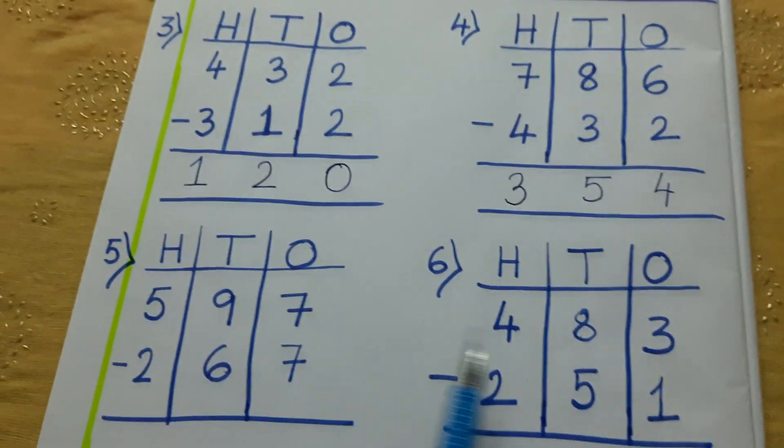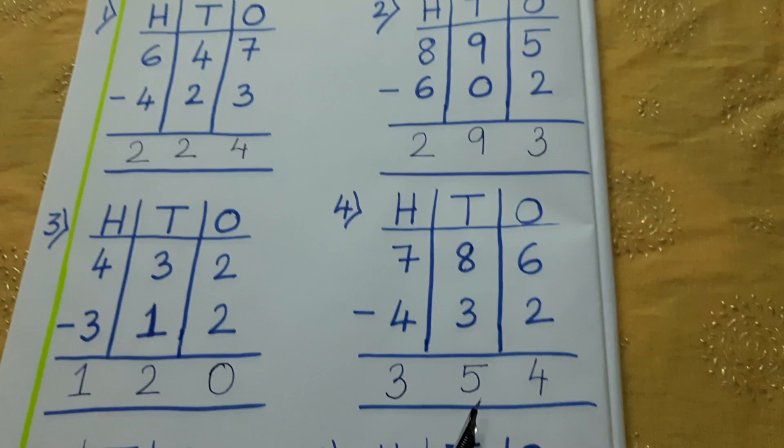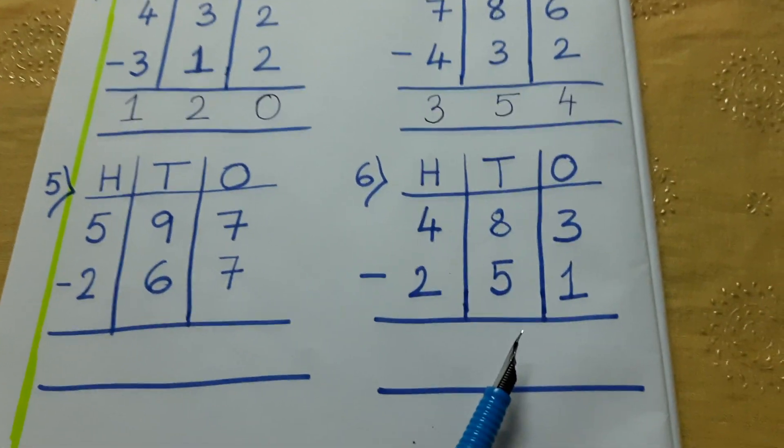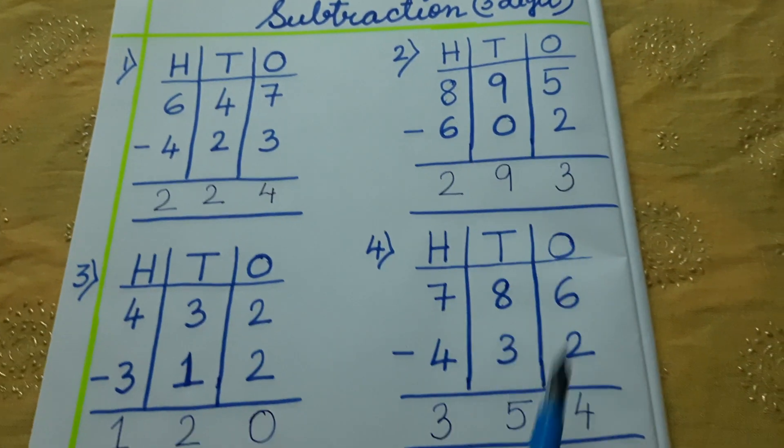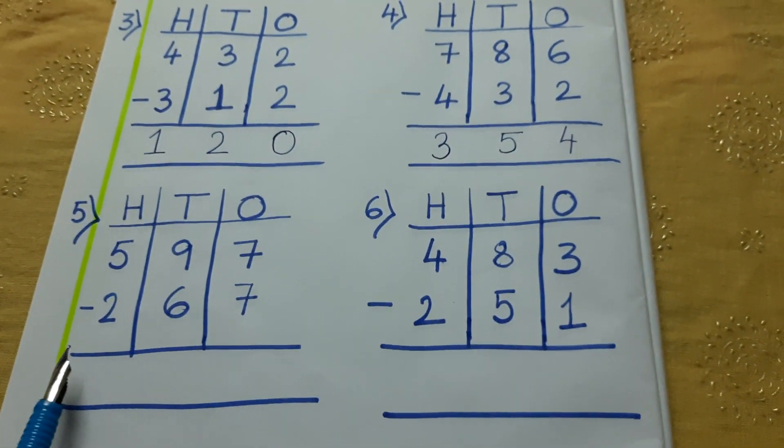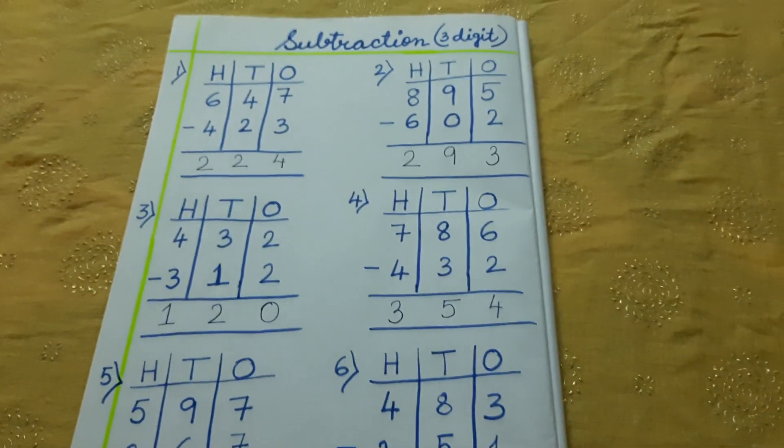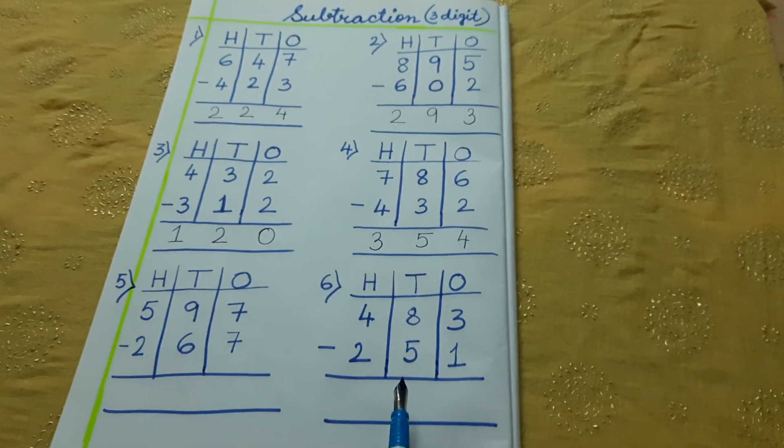See here students. Total 6 sums I have given. 4 sums I have done for you. And 2 are left. This I will not do. You have to do. You have to do in your homework total 6 sums. 4 I have explained. 2 I have left for you to do by yourself without any help.